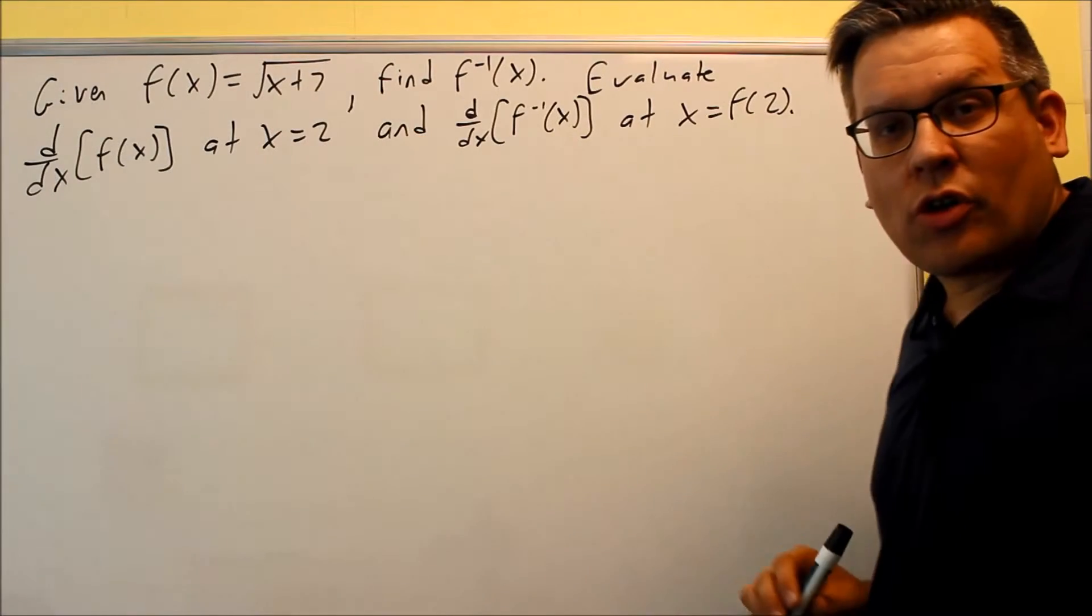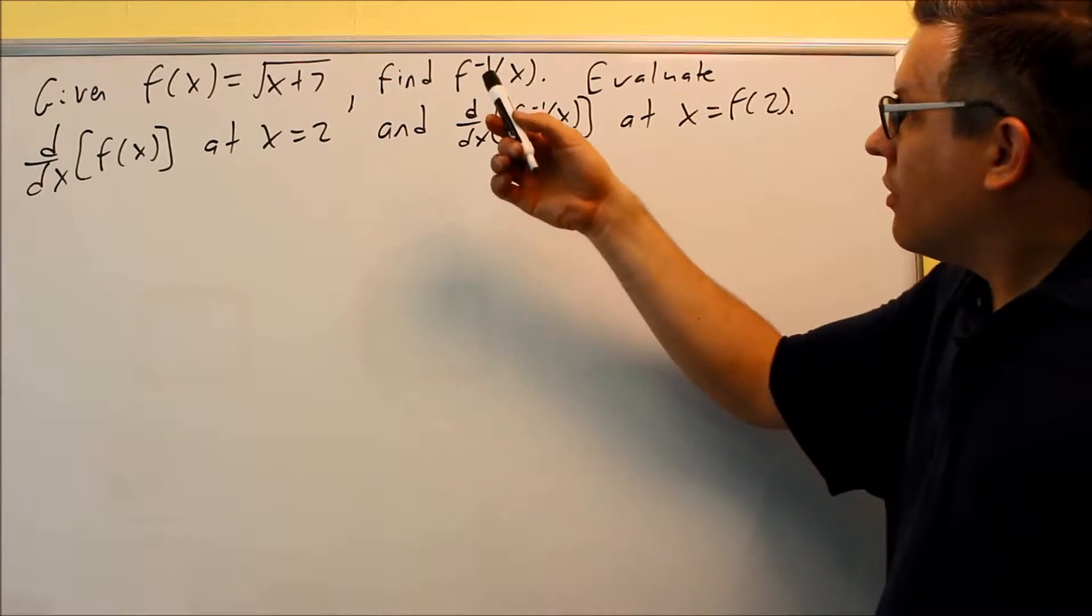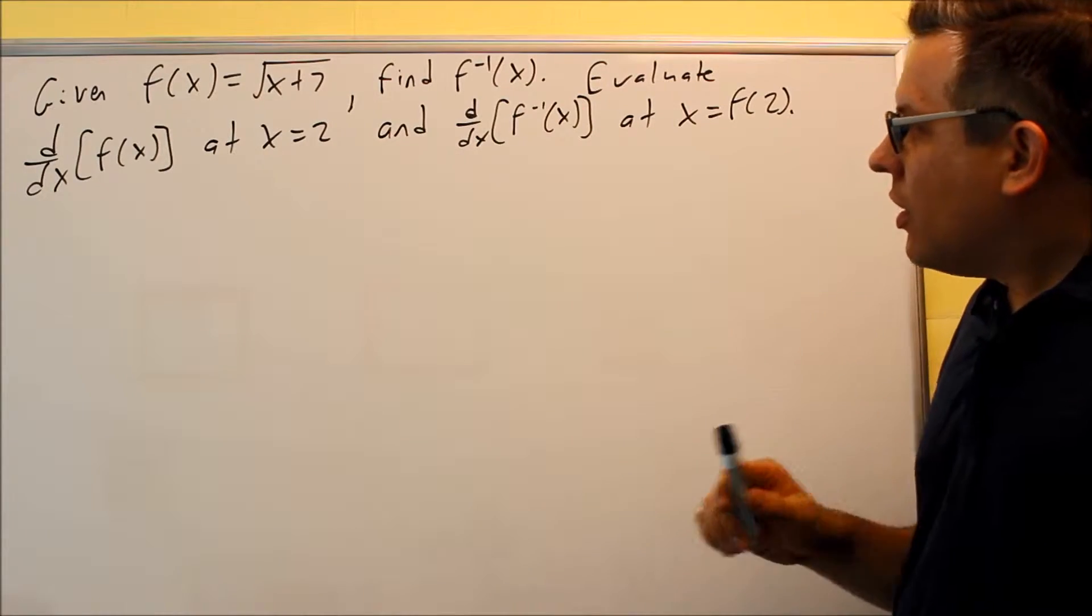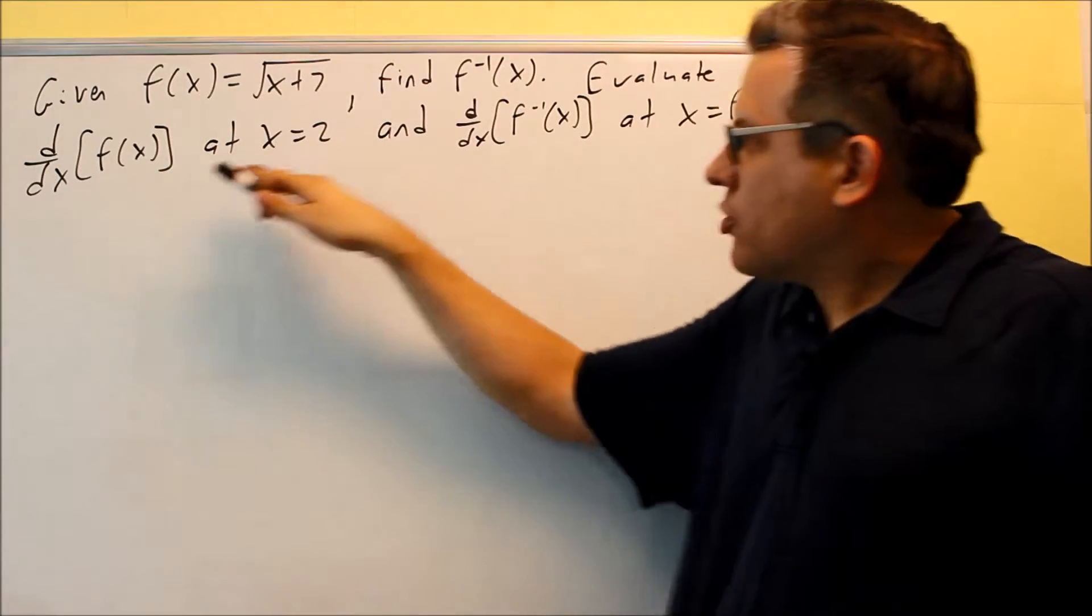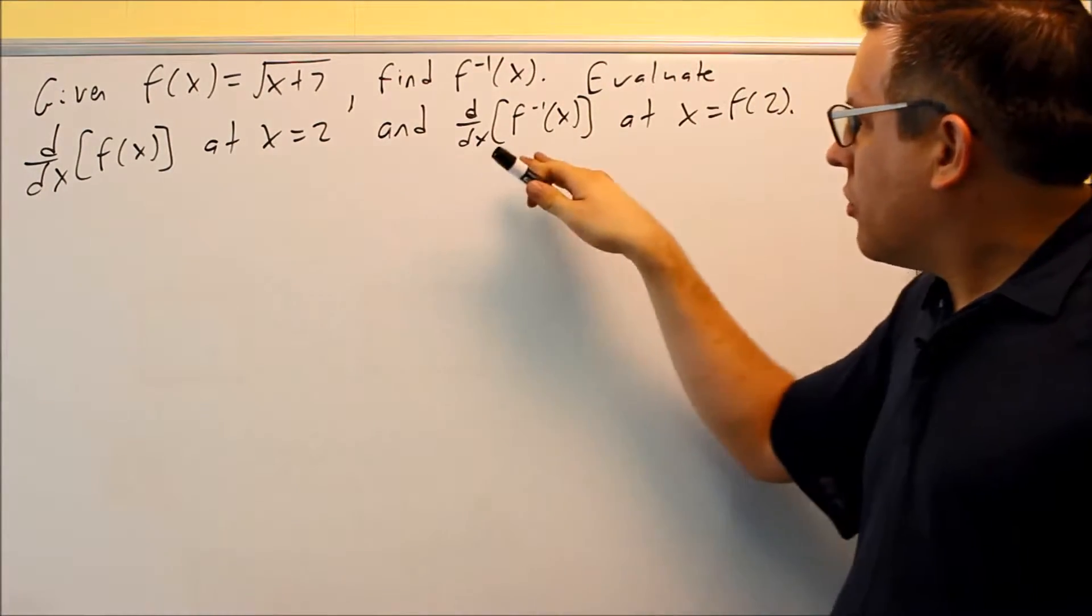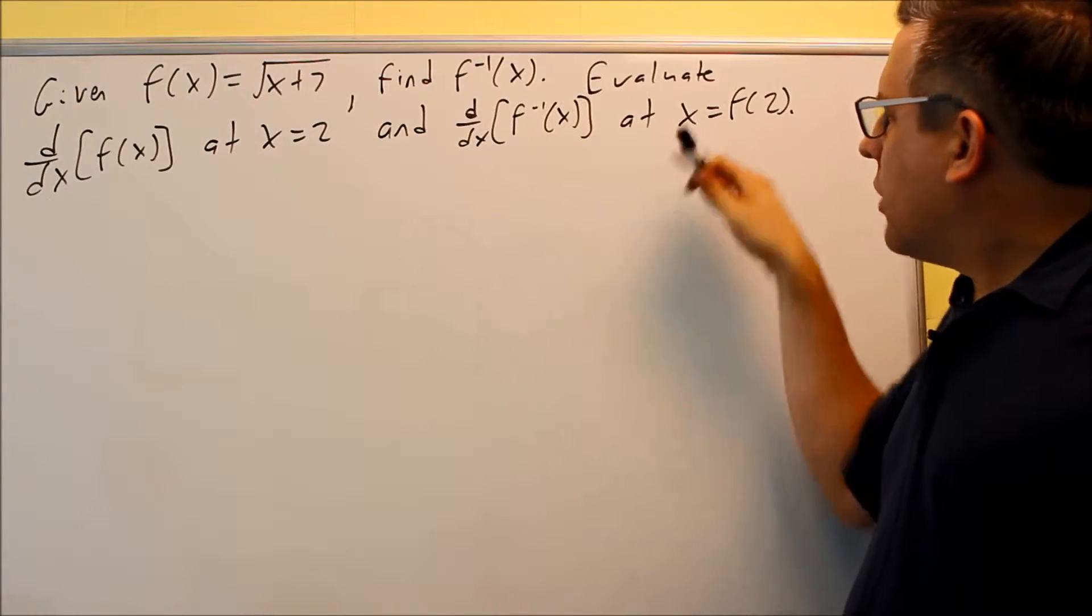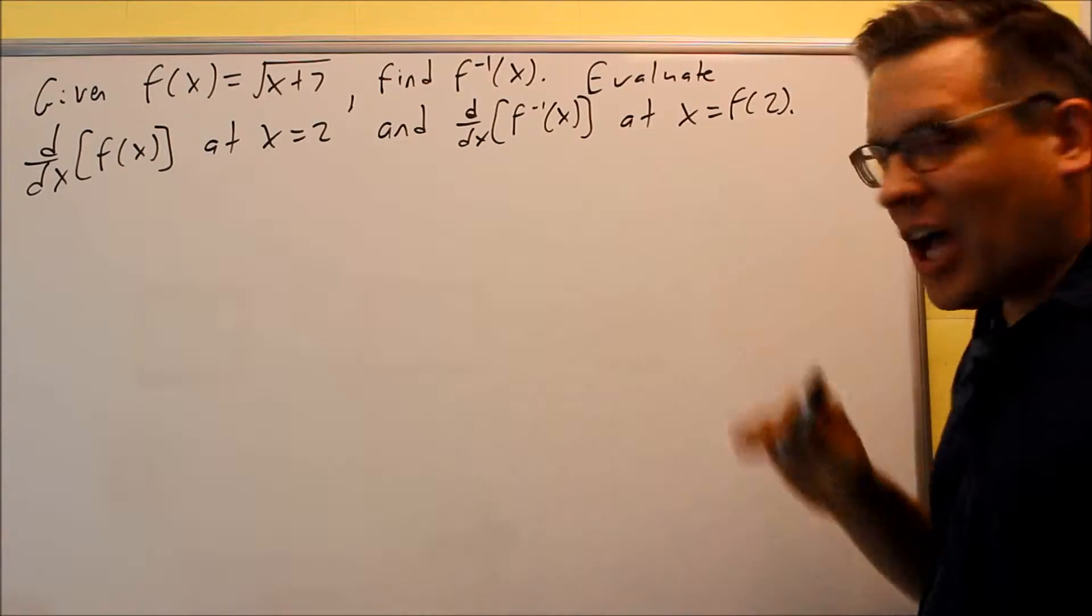We're given f(x) equals the square root of x plus 7. We want to find the inverse and evaluate the derivative of the original at x equals 2, and also the inverse at x equals f(2).